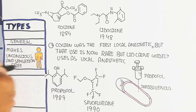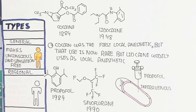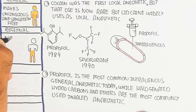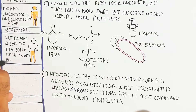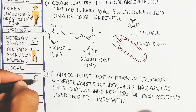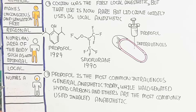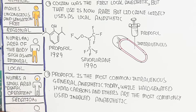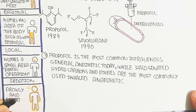Local anesthetic numbs a small, specific area — for example, the hand or mouth — and is used for location-specific procedures such as dental operations. Sedation means making the person drowsy and relaxed but not unconscious, so the patient can still feel and sense the environment.